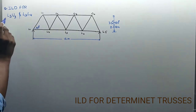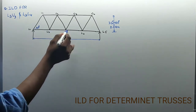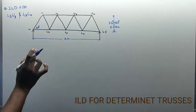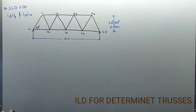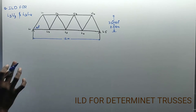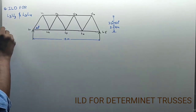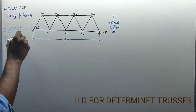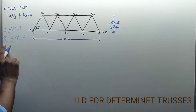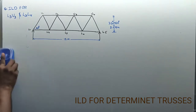If you observe this problem, he is asking us to draw ILD for the member force L3U3 and for the member L3L4. If you can solve these two members — the top and any member force in determinate trusses — please observe carefully. This solution involves only two or three steps: summation of vertical forces, and summation of moments.